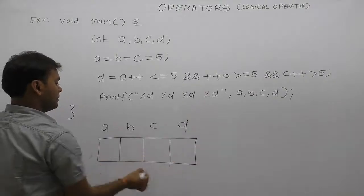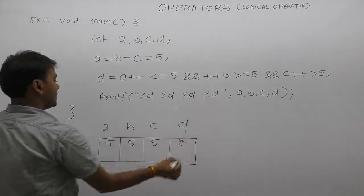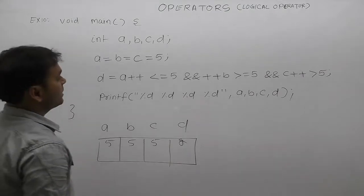Initial value of a, b, c is 5, 5, 5, and some garbage value for d.